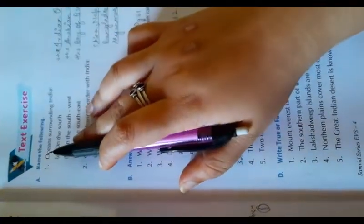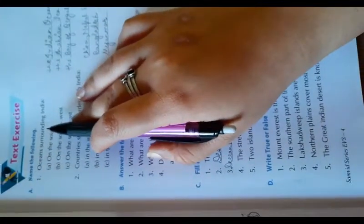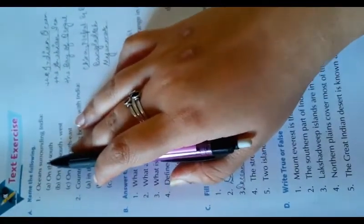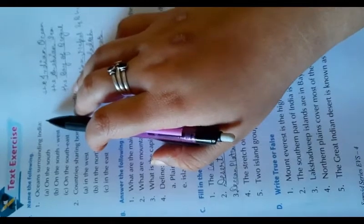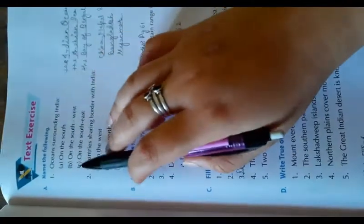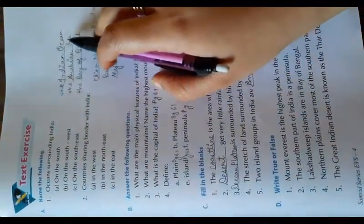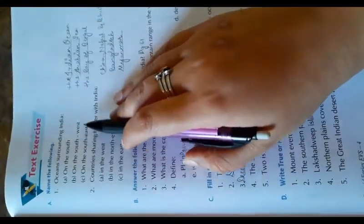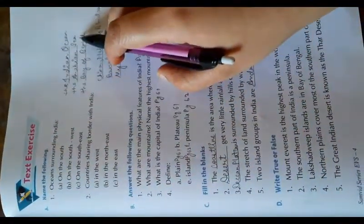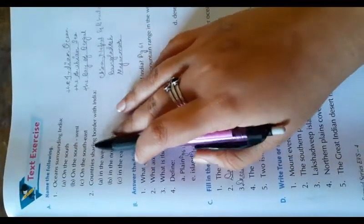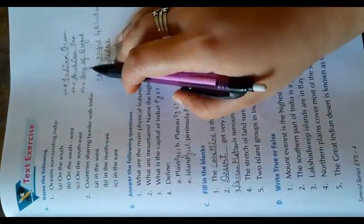So here come to the page number 63 and the exercise number A. Name the following oceans surrounding India: first on the south, the Indian Ocean; on the southwest, the Arabian Sea; on the southeast, the Bay of Bengal.